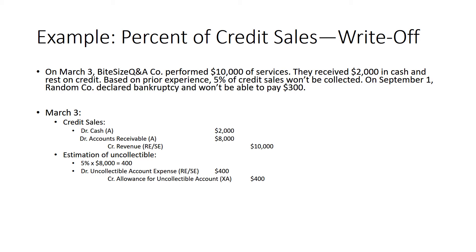Now let's go back to the percentage of credit sales example and think about a write-off. On March 3rd, ByteSize Q&A company performed $10,000 of service, received $2,000 in cash and the rest on credit, with 5% of credit sales not expected to be collected. What's new: on September 1st, a customer declared bankruptcy and won't be able to pay $300. On September 1st, we record the write-off. We're no longer expecting to receive that accounts receivable, so we credit accounts receivable for $300 and debit the allowance for uncollectible accounts.